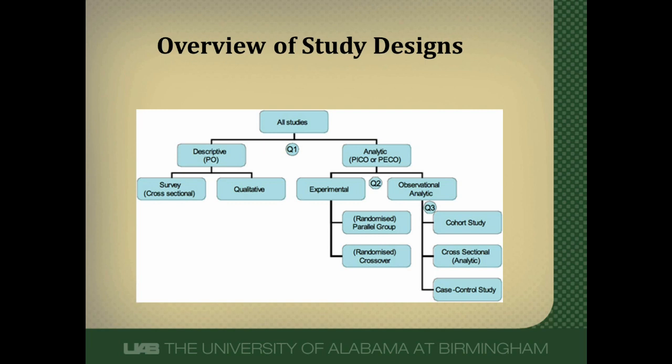This figure shows the hierarchy of study designs. Studies can be either descriptive or analytic. Descriptive studies — the P and O stands for patients and outcomes — are not able to look at relationships between potential causative factors and outcomes. They can only describe whether those factors are present. Descriptive studies are things like surveys and qualitative studies.